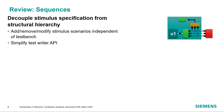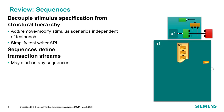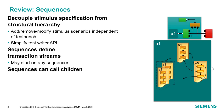The key here is that we decouple the specification of stimulus from the structural hierarchy of the test bench. This allows us to add, remove, or modify stimulus scenarios independent of what's actually in the test bench. Separating things in this way provides us a very simple API for the test writer. If we look at a particular sequencer, we can have a sequence running, and that sequence's job is to define a stream of transactions. You can have multiple sequences running in parallel, and you can have a parent sequence call child sequences.